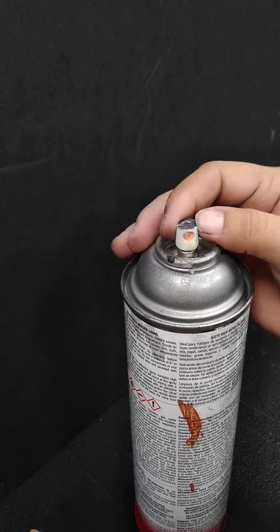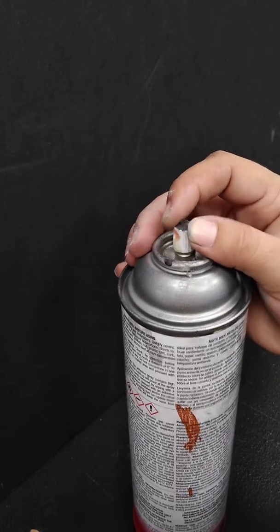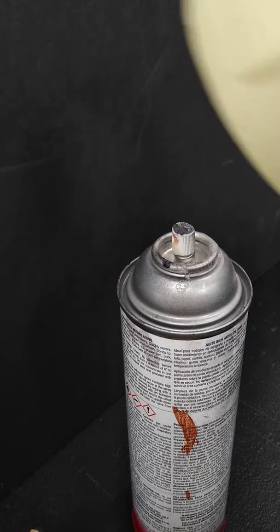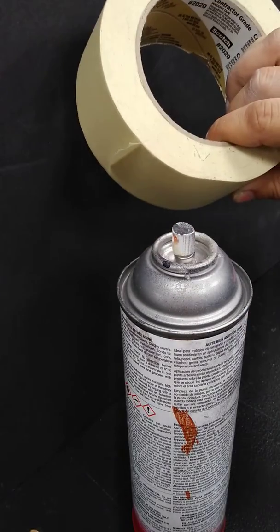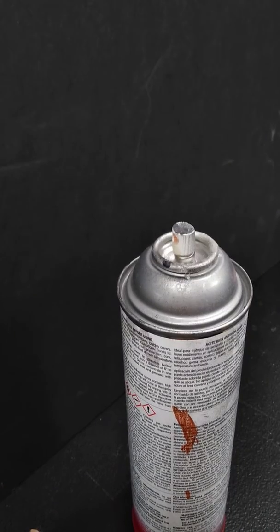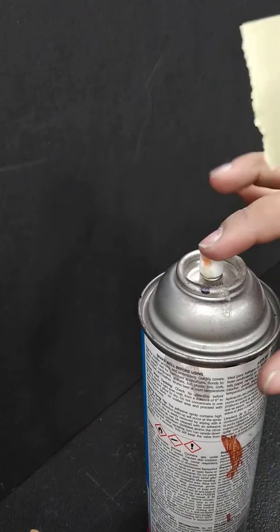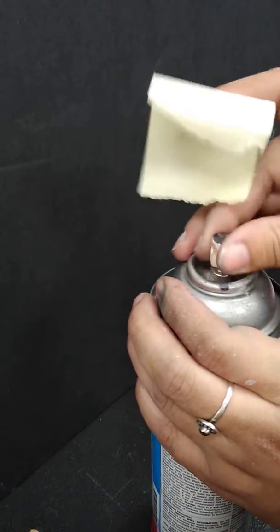this area. You get little chunks, you can see right there. What I do is I just take masking tape, and you can either just leave it on the can or take it off. I usually take it off to make it easier.